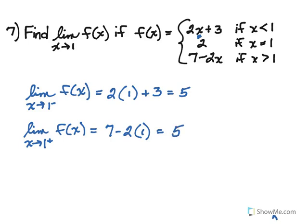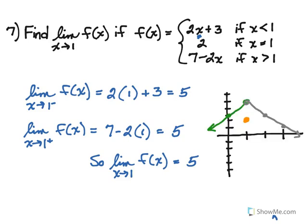Therefore, since the limit from the right equals the limit from the left, we can conclude overall that the limit of this function as we approach one is going to equal five. One little note about this — notice nowhere did we use that middle piece. If you think about what this might look like graphed, here we have the graph of this piecewise function. The first and last pieces have open holes at x equals one.